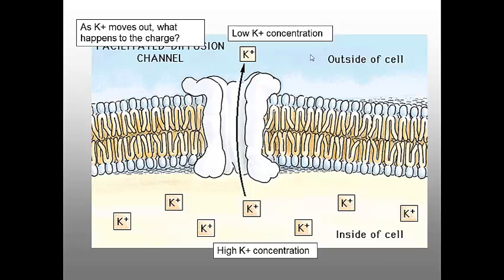So in diagrammatic form, we have all these K+ here, all these K+ slowly leaking out this way. And as positive charges leave the cell, they leave a negative charge behind and they generate a positive charge on the outside of the cell. So the inside of the cell is going to be negatively charged. And that is the resting potential.